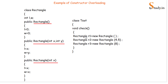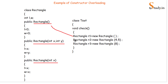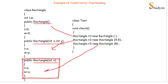When creating object r1 without any parameters, the first non-parameterized constructor is called. When creating object r2 and passing two int arguments, the second constructor with two parameters is called. When creating object r3 and passing one argument, the third constructor receiving one int parameter is called. This is an example of constructor overloading.